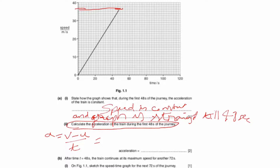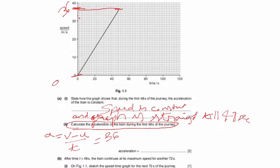From the graph, the final velocity at 48 seconds is 36 meters per second. The initial velocity is 0 because the train starts from rest. So acceleration equals 36 minus 0 divided by 48. Calculating on the calculator, it comes to 0.75 meters per second squared.